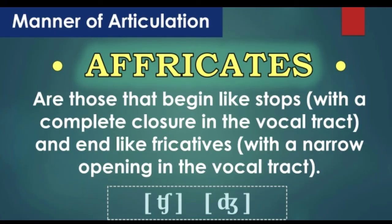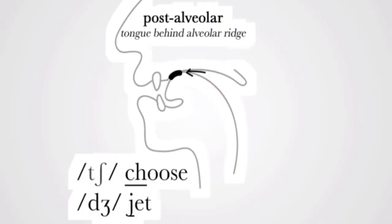Next are affricates. What happens to the airstream in the production of these sounds? The airstream gets completely blocked — like plosives — in the first stage. But the second stage is different from that of plosive sounds: the release is not sudden here, the release is slow. Look at this figure — there is complete closure in the vocal tract, meaning the airstream is completely blocked just behind the alveolar ridge.